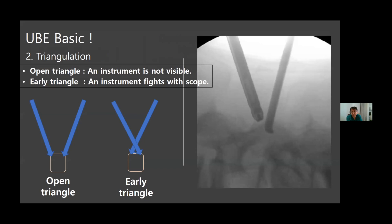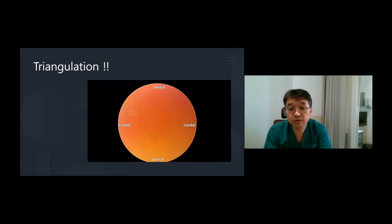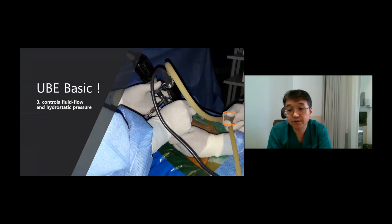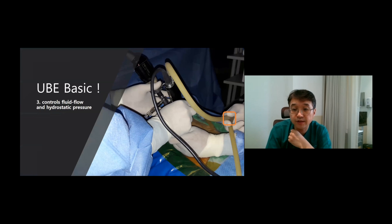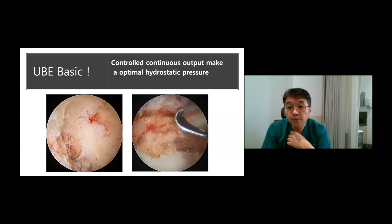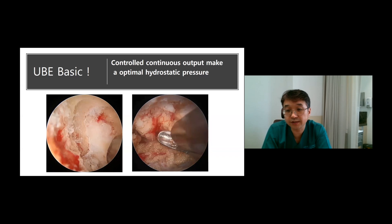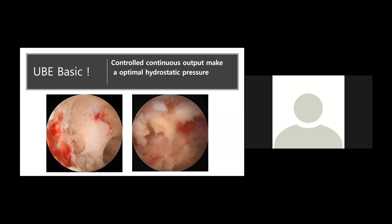Second is triangulation. This means the scope and instrument must meet under the target point. Open and early triangular surgery is difficult. If you make good triangulations, you can see the instrument on the screen — this shows a good triangulation shape. Third is control of water pressure. Controlled continuous outflow can make an optimal hydrostatic pressure. We can check bleeding and using hydrostatic pressure some work becomes easier. This video shows that blocking outflow is useful for working.